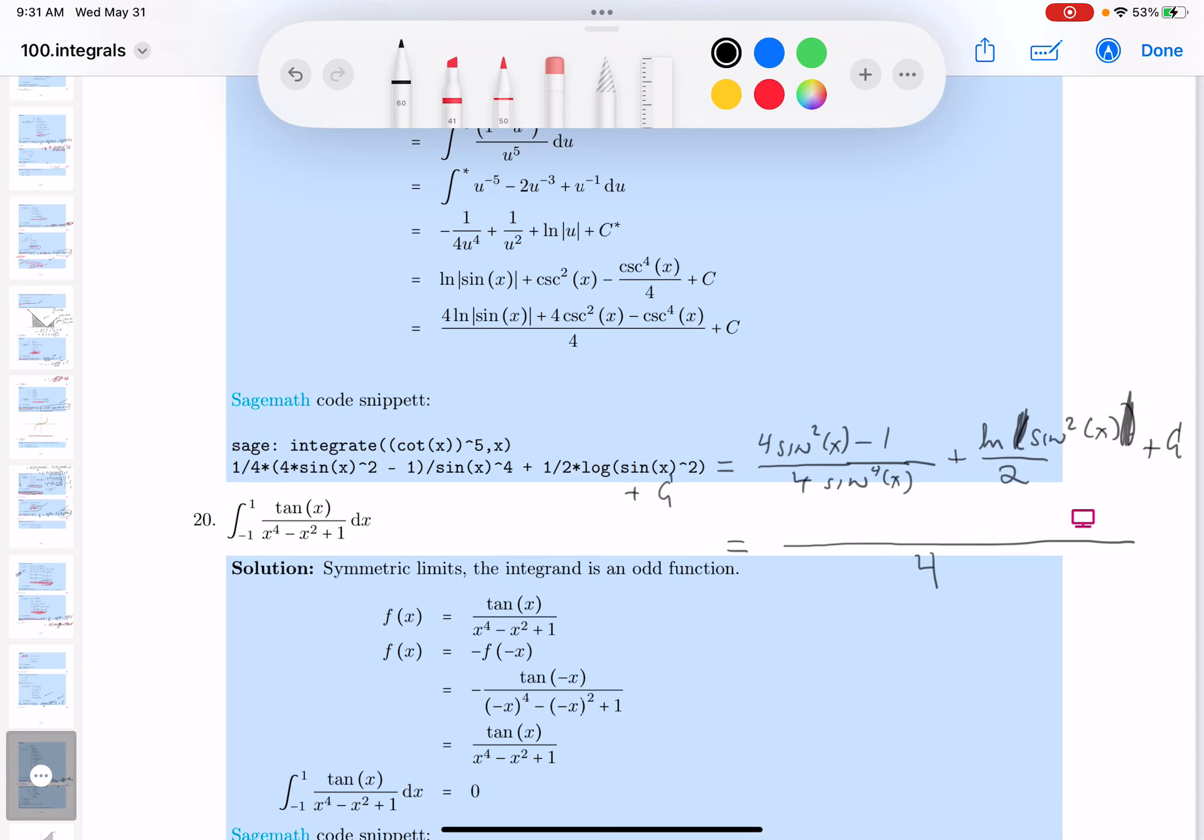I'm going to be dividing through by sine four. So I'm going to get four. That would be cosecant squared down minus cosecant to the fourth power.